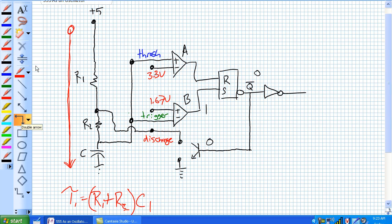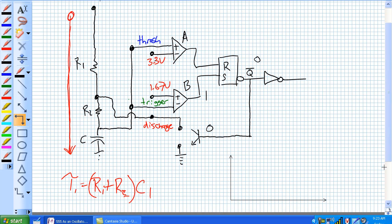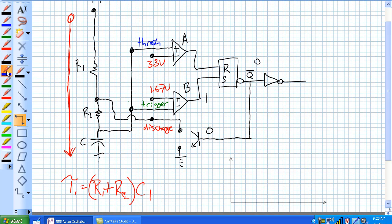So now, if we were to draw a graph of the charging capacitor, let's make that a little bit bigger, let's say it started at 0 and it's increasing. There's a couple points to be concerned about. Now, it reaches 1.67 volts, and it continues to climb.